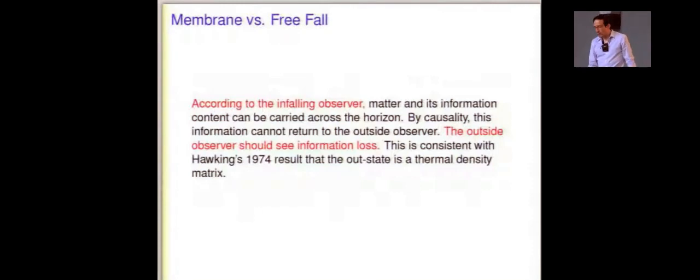According to the infalling observer, things are exactly the other way around. These guys could fight forever. So, he falls in with a star that's collapsing or whatever. He sees matter cross the horizon harmlessly by the equivalence principle. And all the information, the particular pure quantum state the star was in goes into the black hole, unharmed, and there's nothing in the way. So, to him, it's clear that the outside observer should see information loss. How could the information possibly get out if it just went into the black hole? By causality, it can't get out.